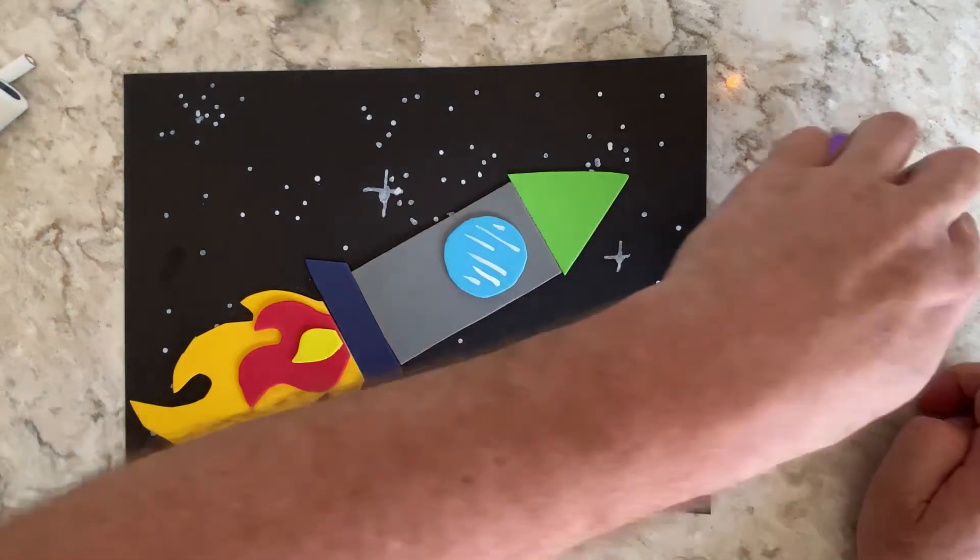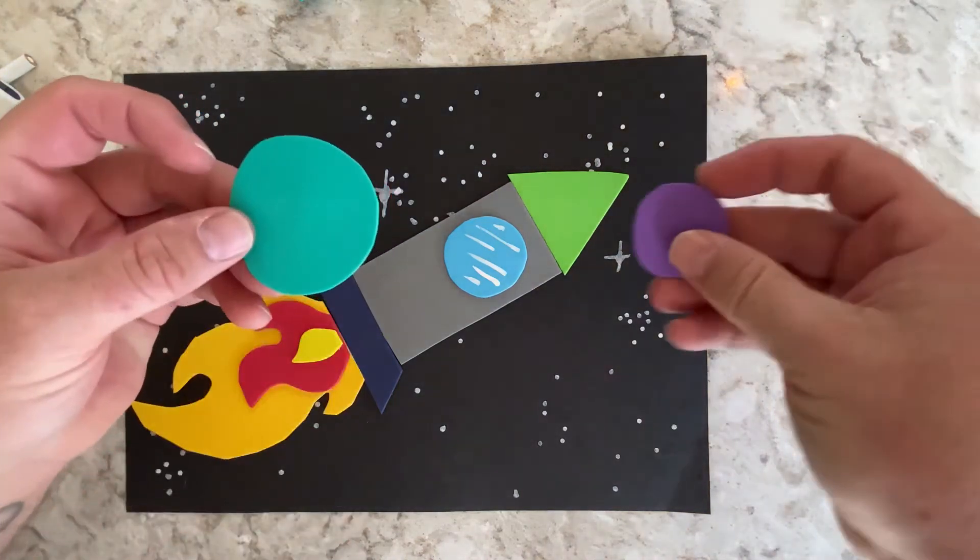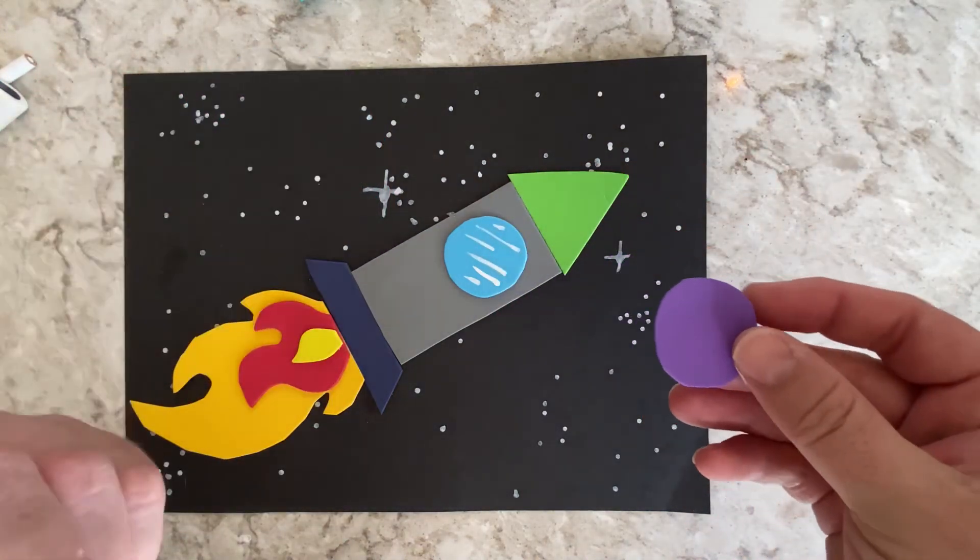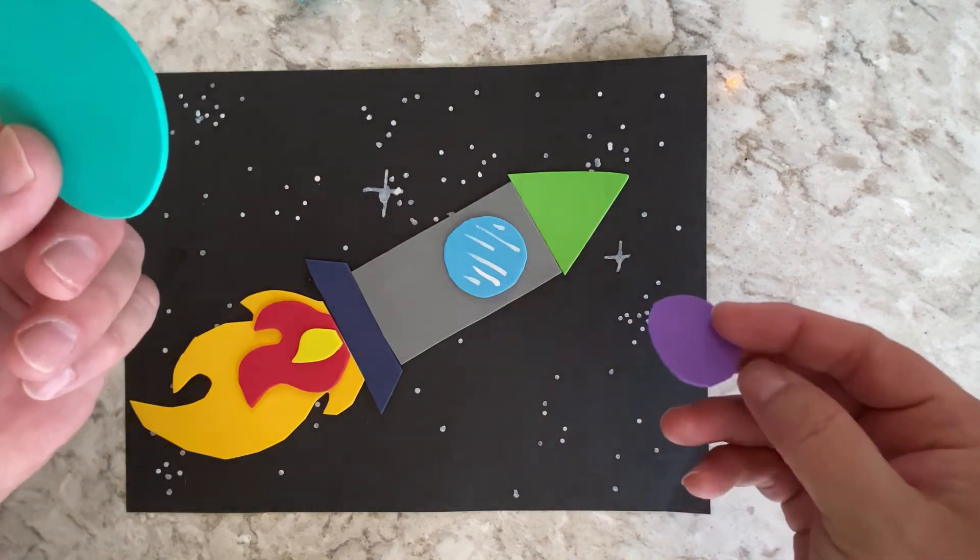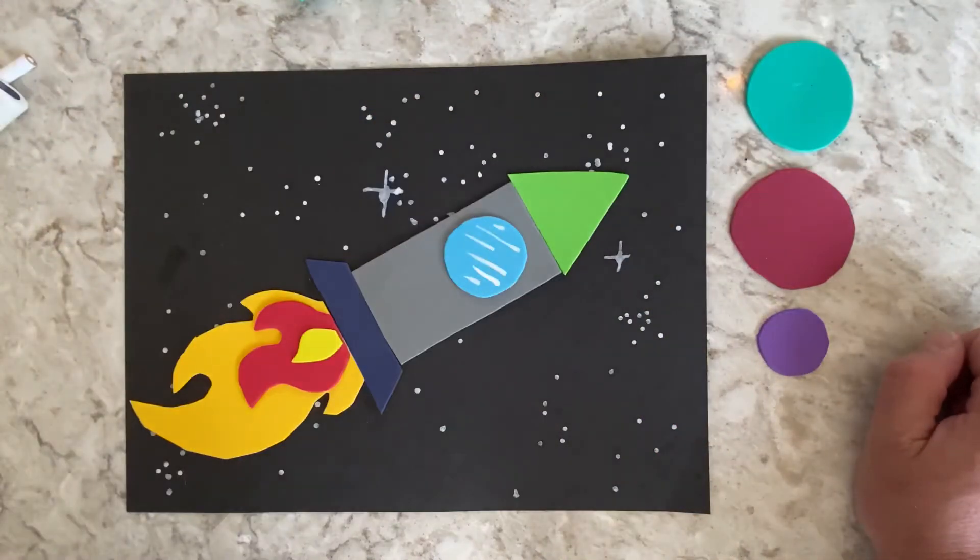Now, what we need to do to make this even cooler is to put some planets. So, I've got my circles. Now, what are these shapes called again? That's right. Geometric shapes. Geometric. Geometry.